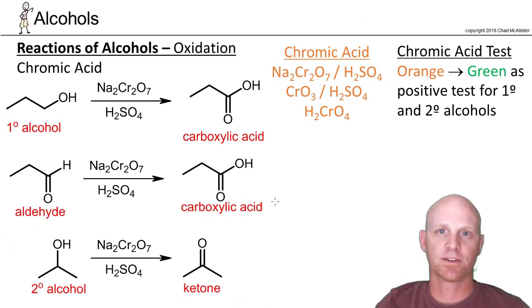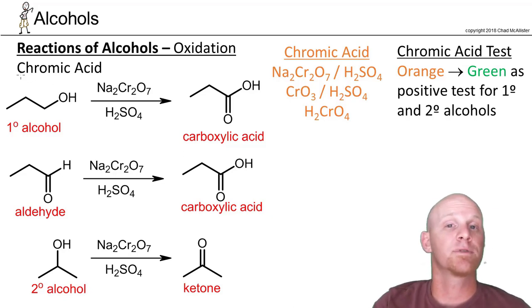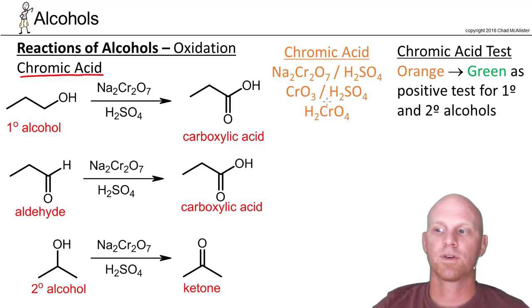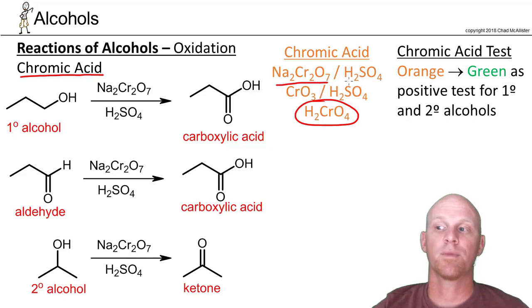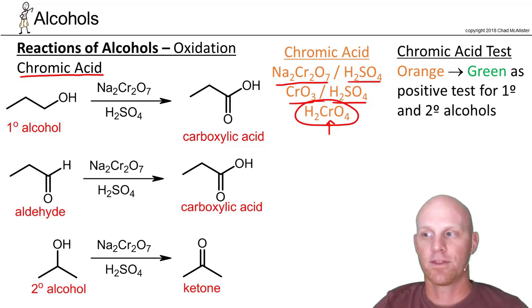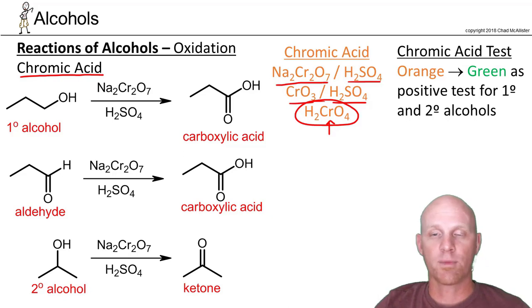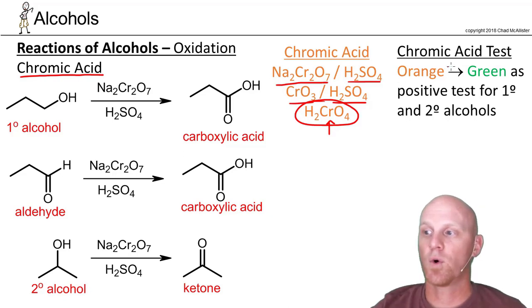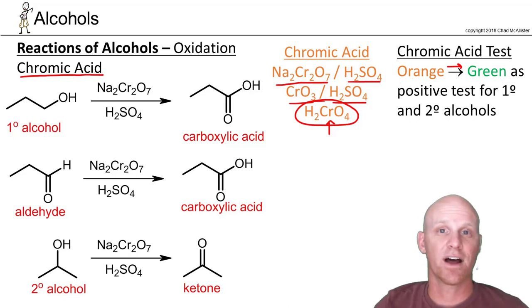We have two major oxidizing agents we're going to look at. There's technically a third one — potassium permanganate — but most classes won't cover it; it does the same thing as chromic acid, FYI. The first one is chromic acid, H₂CrO₄. You can make it by adding sodium or potassium dichromate with sulfuric acid or H₃O⁺, or by mixing chromium trioxide with H₃O⁺ like H₂SO₄. Either method forms H₂CrO₄. I've written it in orange because chromic acid is orange, and as an oxidizing agent it causes the alcohol to get oxidized while it itself gets reduced, going from orange to green.